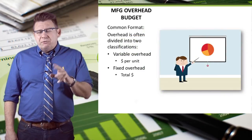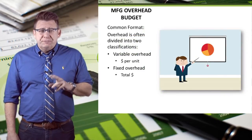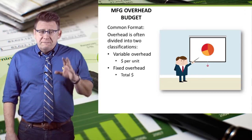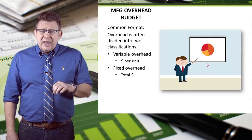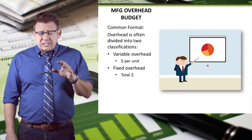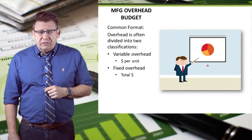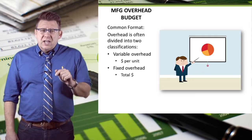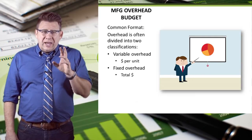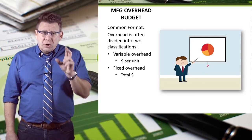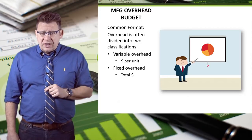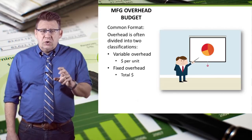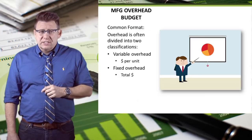A common format is to divide overhead into two classifications: Variable Manufacturing Overhead and Fixed Manufacturing Overhead. Recall that variable costs are shown as per unit costs, whereas fixed costs are shown as total costs.